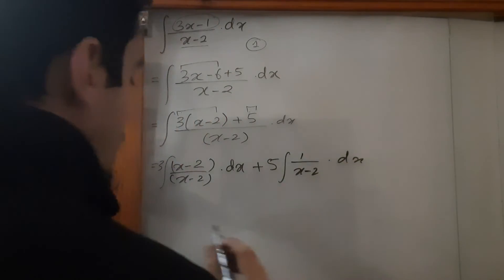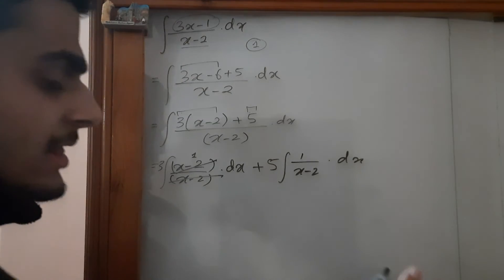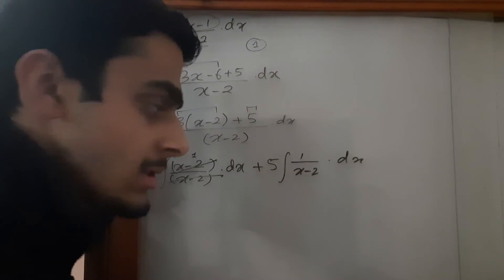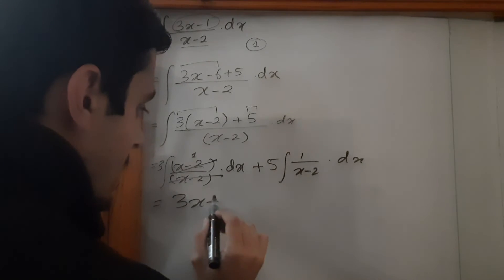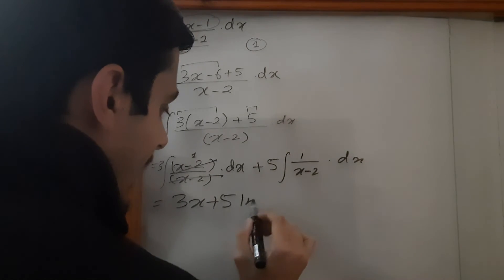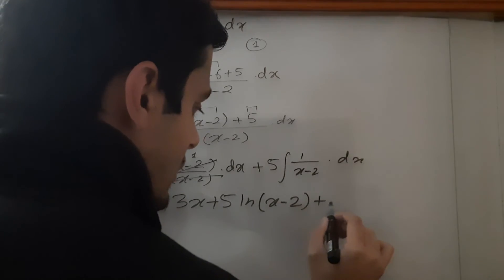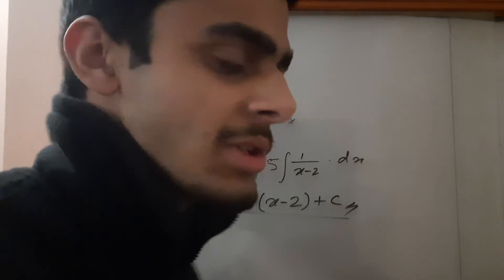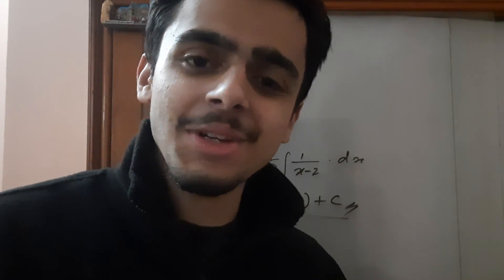Now it's simple integration. The (x - 2) cancels, leaving 1 inside, and the integral of 1 is x. So the final answer is 3x + 5 ln|x - 2| + C. This is the final answer to this question. I hope you learned how to do this, and hope to see you in another video. Thank you.